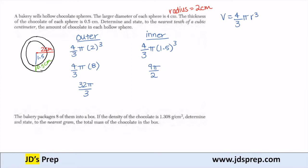So the question is to determine the amount of chocolate in each hollow sphere. And the amount of chocolate is the volume of the outer sphere minus the inner sphere. So that's 32π over 3 minus 9π over 2, which when we plug that into the calculator is approximately 19.4 cubic centimeters.